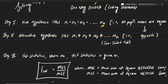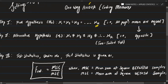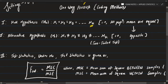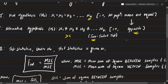Step 2 is the alternative hypothesis, which is the opposite of the null hypothesis. Instead of equal to, we use not equal to. We can use a two-tail test with wording opposite to the null hypothesis.